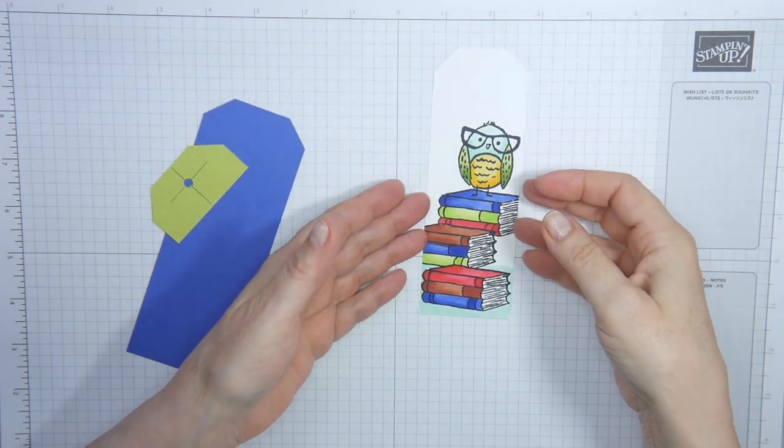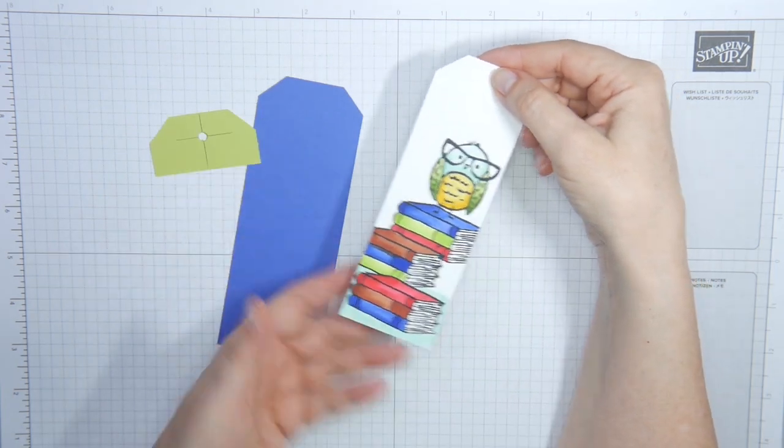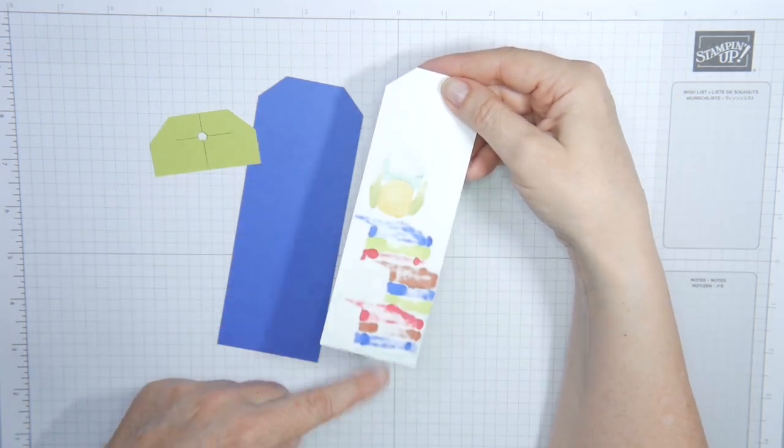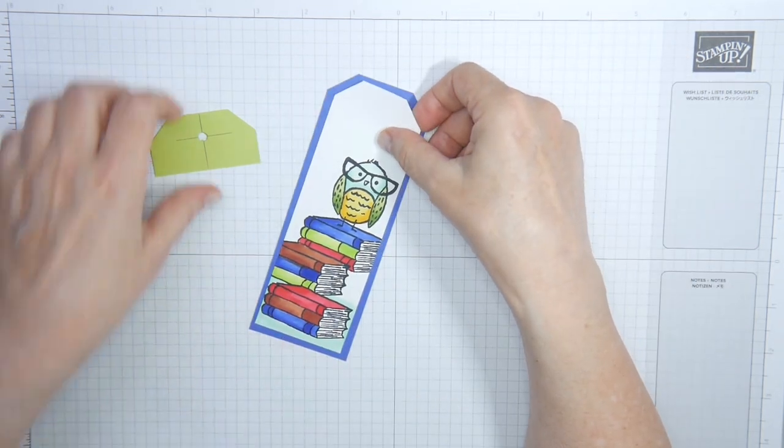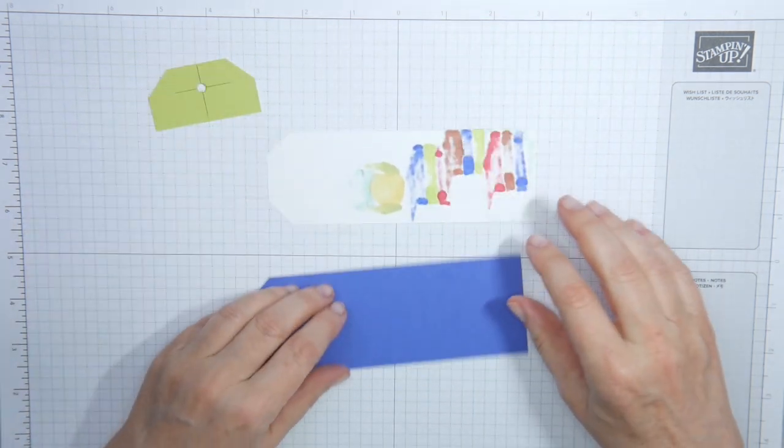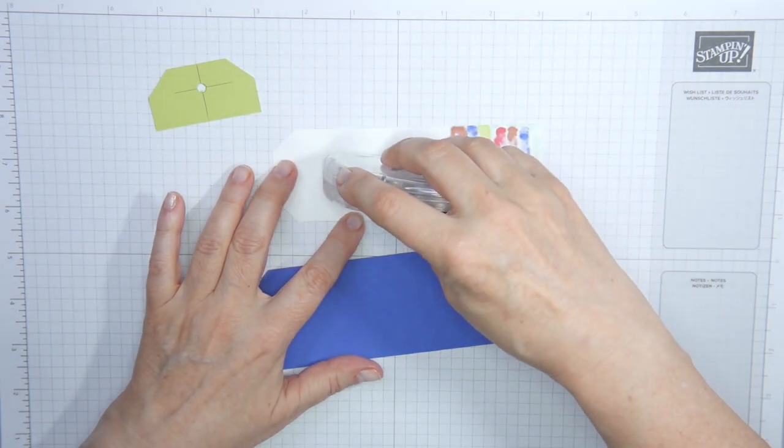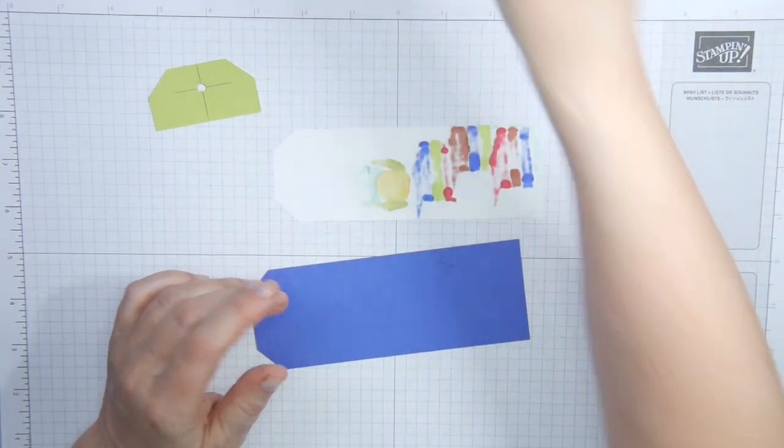I've colored the top of the bookmark and I'll show you why I use two pieces of paper. Because when you use the blend, you see, it'll bleed through the paper. So you want something underneath to hide that. Then I'm going to put the two together.